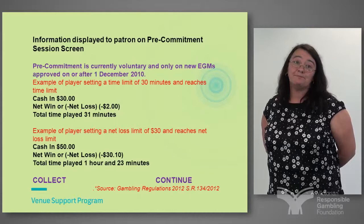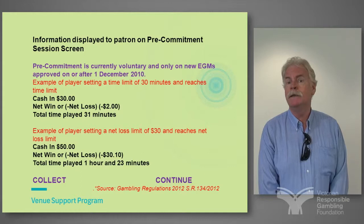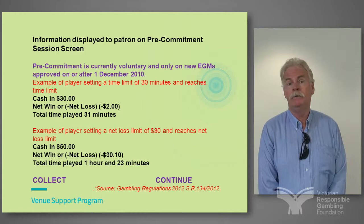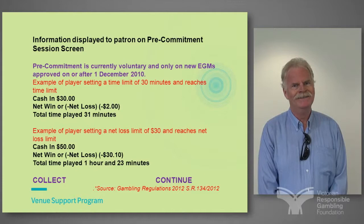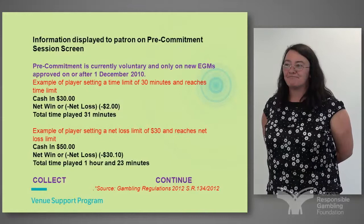One of the important things about pre-commitment is it gets patrons to control themselves rather than saying to a staff member 'tell me around 3:10, I've got to go and pick up the kids.' A staff member can say you can do that on your machine — it will tell you. Same with the spend: 'I'm only going to spend $200 a day — tell me no.' Staff can't tell you no, but you can control it yourself. It avoids creating uncomfortable situations for staff especially with regular patrons, and lets them manage themselves.